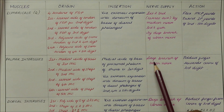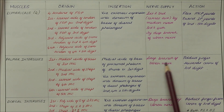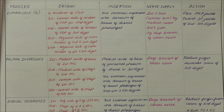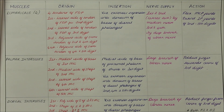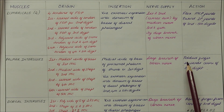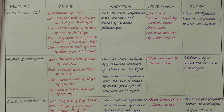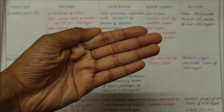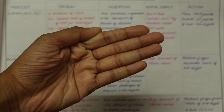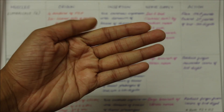The palmar interossei are supplied by the deep branch of the ulnar nerve. Their action is adduction of the fingers towards the center of the third digit.